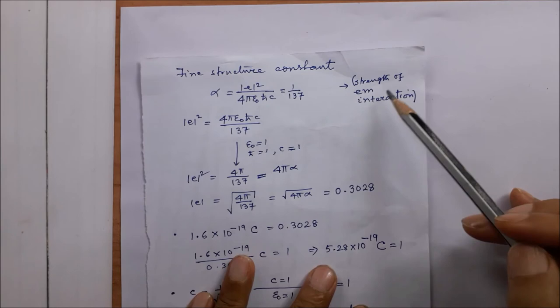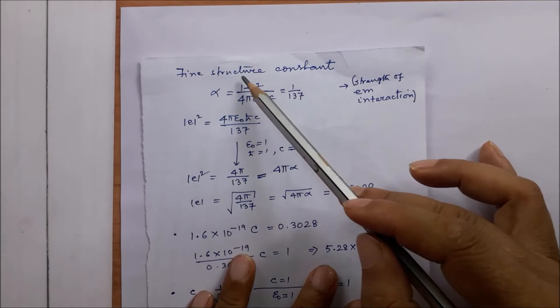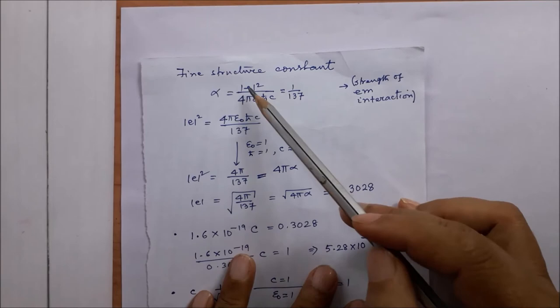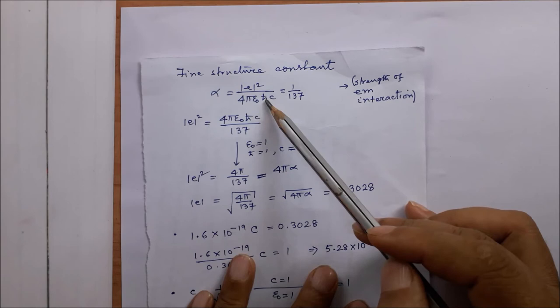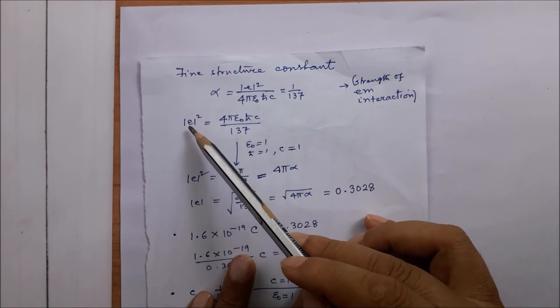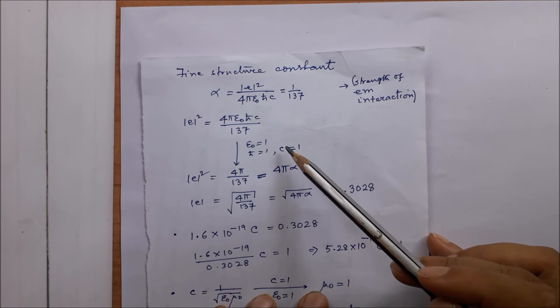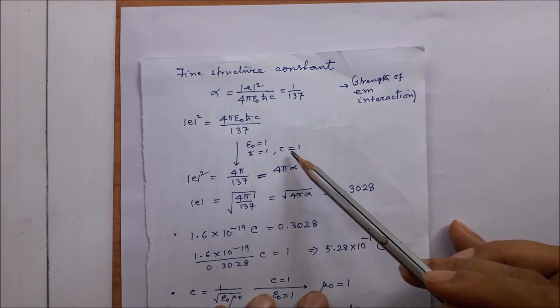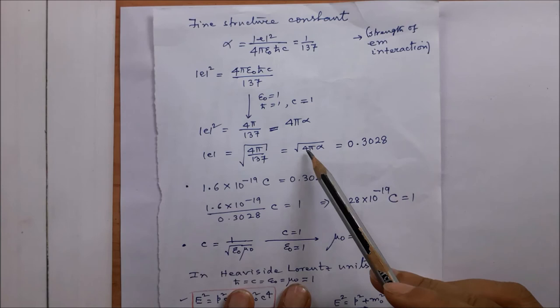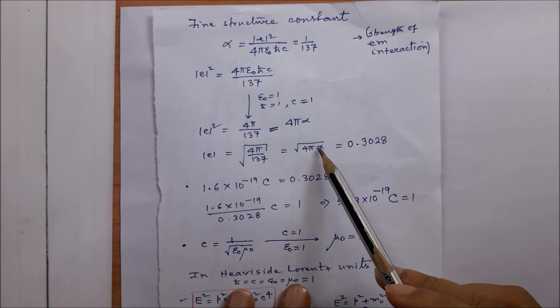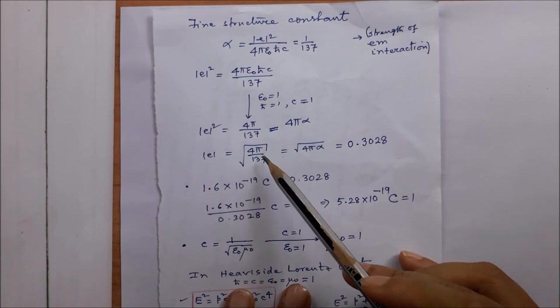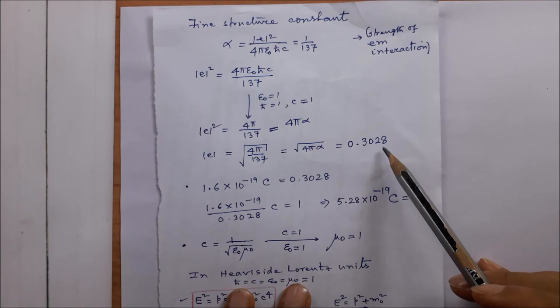Let us speak about the strength of electromagnetic interaction, measured by the fine structure constant whose value is 1/137. From its expression in terms of fundamental constants we can find the electronic charge e-squared in terms of epsilon-0, h-cross, and c. Setting epsilon-0 = 1, h-cross = 1, and c = 1 in the Heaviside-Lorentz natural unit system, we get e = square root of (4 pi alpha). Putting alpha = 1/137, calculation gives e equal to 0.3028.